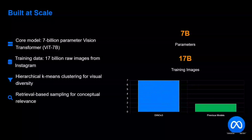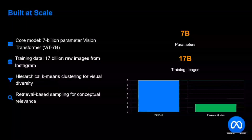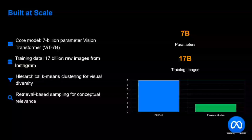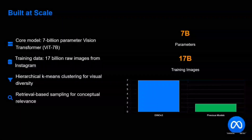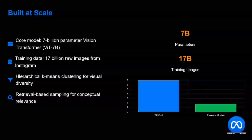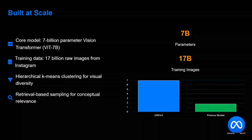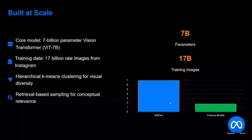Built at scale: the core model is a 7 billion parameter Vision Transformer (ViT), trained on 17 billion raw images. It uses hierarchical K-means clustering for visual diversity and retrieval-based sampling for conceptual relevance. As you can see in the comparison, DINOv3 is 7 billion parameters while others were much smaller.